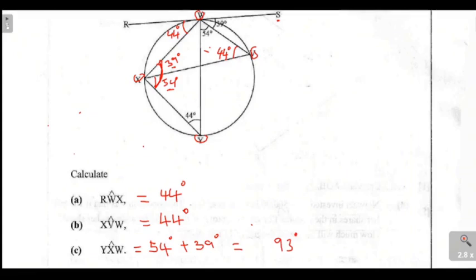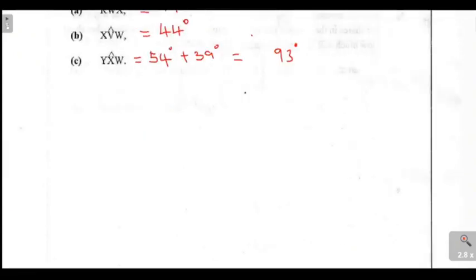So they do give you the answer space where you are supposed to write your final answer. Here, we said the first one is 44 degrees. Again, the second one is 44 degrees.